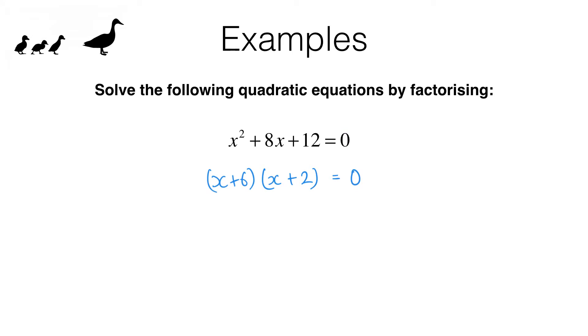We have a product here. We're multiplying x plus 6 by x plus 2. Don't forget there's an invisible multiplication symbol in here. If they multiply to give you zero that means one of these must be zero. So either x plus 6 equals zero or x plus 2 equals zero.